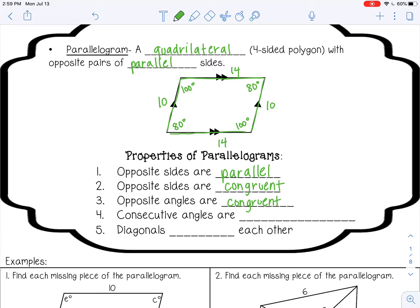The next property says consecutive angles are supplementary. Remember, consecutive means next two, if you go clockwise or counterclockwise. And supplementary means they add to equal 180.